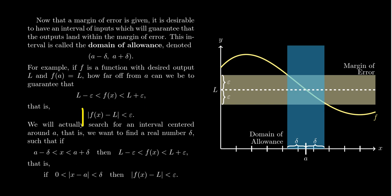Now that a margin of error is given, it is desirable to have an interval of inputs which will guarantee that the outputs land within the margin of error. This interval of input is what we will call the domain of allowance, which will be denoted by a - δ, a + δ. We have L, our desired value, have epsilon, the allowable error, and then we get this margin of error. Well, this value L is going to coincide with the function somewhere. So in order to hit L, what do we aim to hit L? For this function, we're calling that number A. If I take the number A and put it into my machine, put it inside my function, it'll coincide, it'll produce the value L.